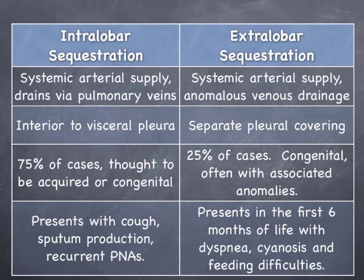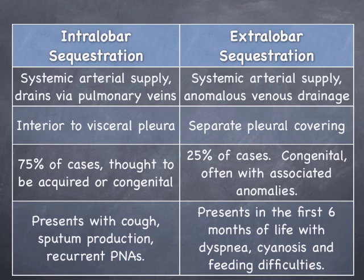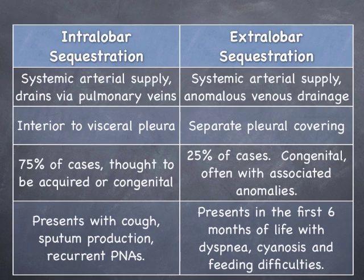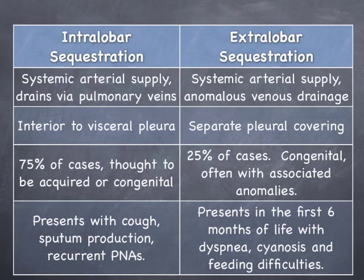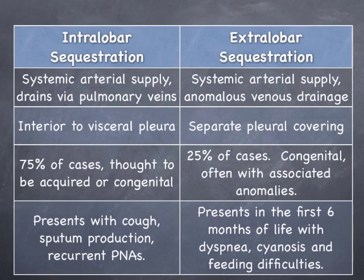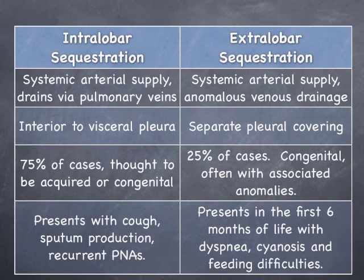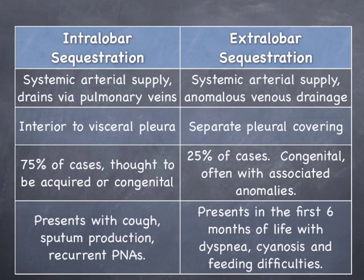Most patients present with cough, increased sputum production, and pneumonia. Generally, half of patients will present by the age of 20. There is not a clear consensus as to whether intralobar sequestration is an acquired or congenital condition. Many think that intralobar sequestrations are acquired and are the result of chronic pulmonary infections and bronchial obstruction, leading to hypertrophy of regional systemic arteries.